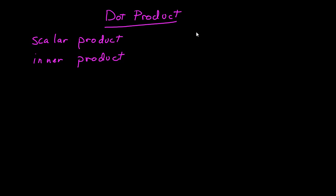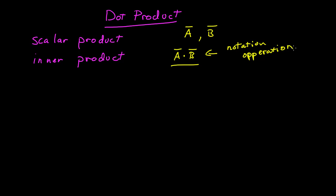The dot product is an operation between two vectors. This is the notation for the operation of taking the dot product. It gives us, in fact, a number — a scalar. That scalar can be calculated a number of different ways. The dot product is equal to the magnitude of a times the magnitude of b times the cosine of an angle.